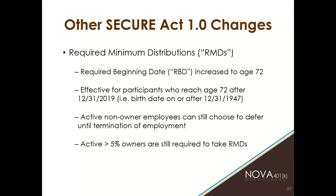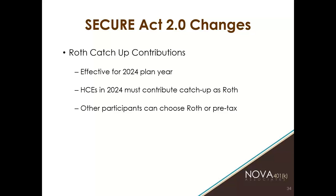Another big change in SECURE Act 1.0 dealt with required minimum distributions. This was the first time the required beginning age increased — from 70 and a half to age 72 — for people born on or after 1947. Non-owner employees can still choose to defer RMDs until they terminate employment. Five percent or more owners are still required to take RMDs even if still employed.